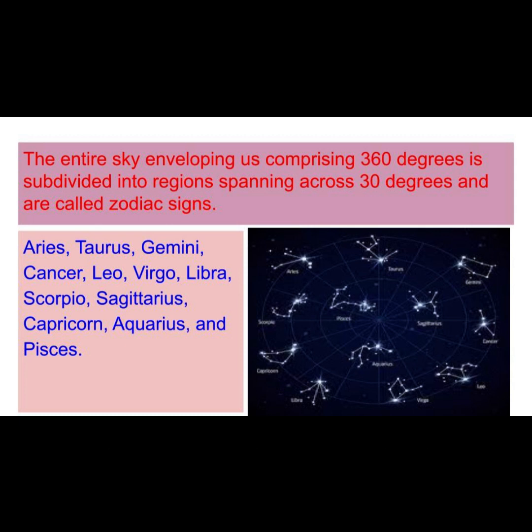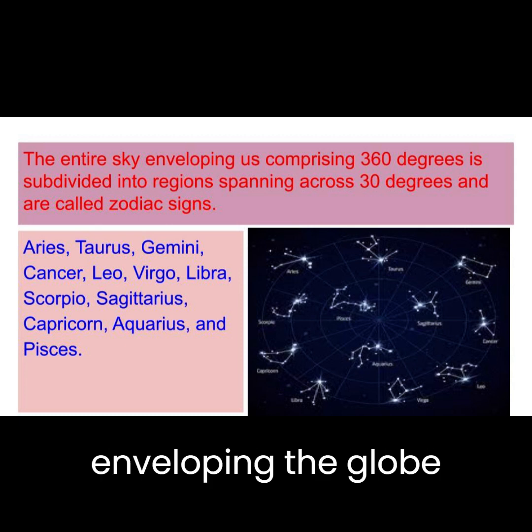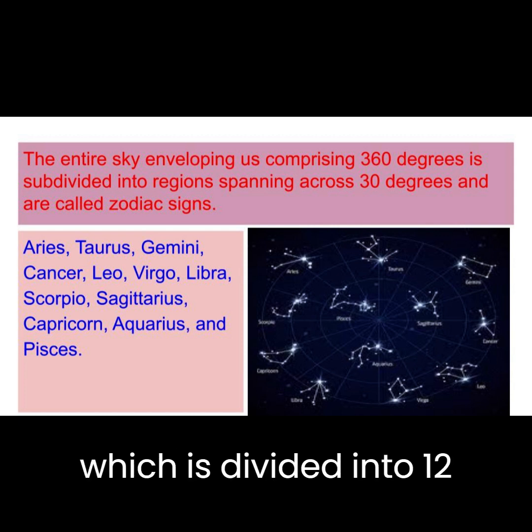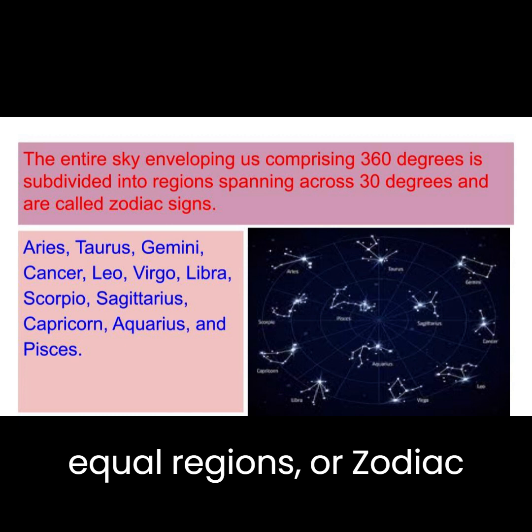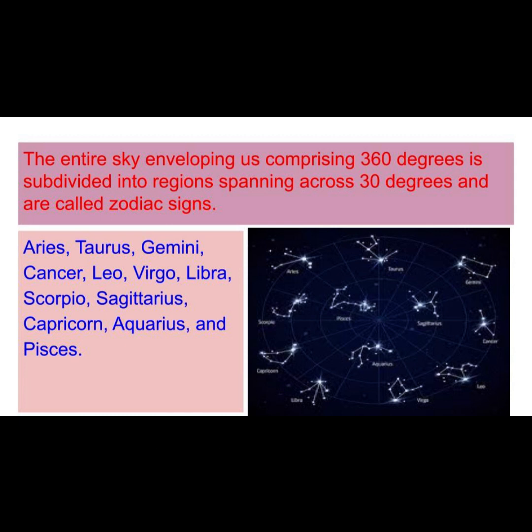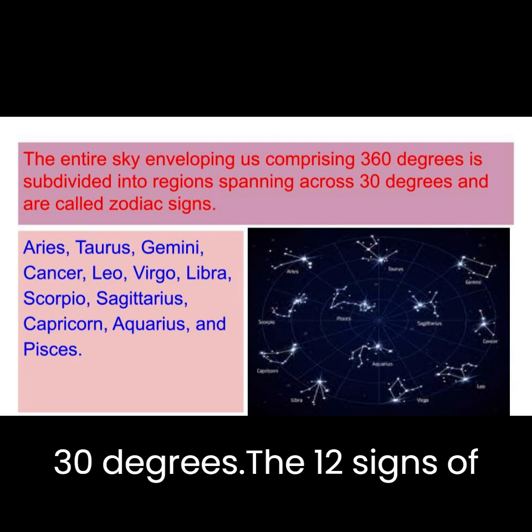The entire sky enveloping the globe consists of 360 degrees, which is divided into twelve equal regions or zodiac signs. Each sign occupies thirty degrees.